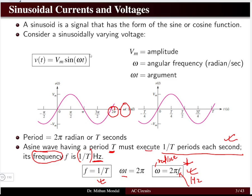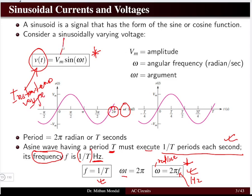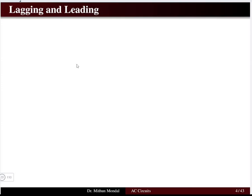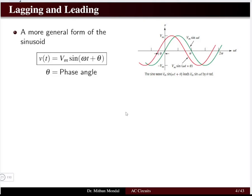The voltage v(t), which is the voltage variation with respect to time, is called the instantaneous voltage. Vm is the maximum amplitude, and ωt is in radians — never in degrees. Now let us introduce the concept of lagging and leading in sinusoids. A more general form of the sinusoid introduces one term θ, which is the phase angle. So the more general voltage equation becomes v(t) = Vm sin(ωt + θ).